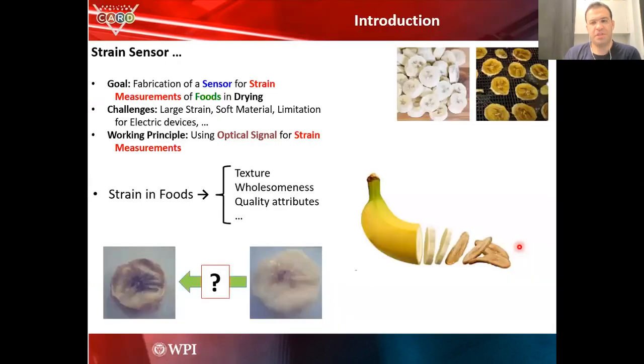For this project, as foods go through the drying process, they shrink, they become smaller. For example, in this case here we have banana, and as they dry you can see here that they become smaller. The goal of this project is to measure that shrinkage.